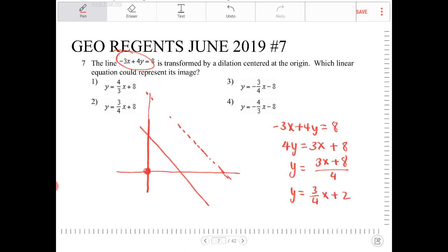I'm looking for a line that has a slope of 3/4. So, the only one that does is option 2.